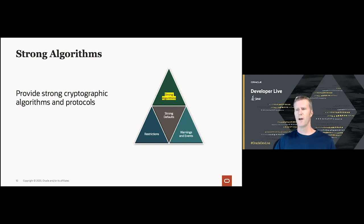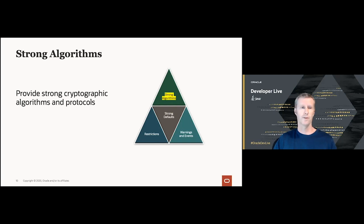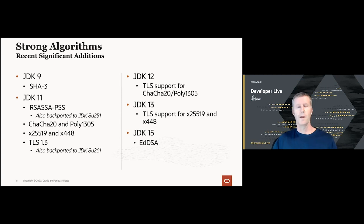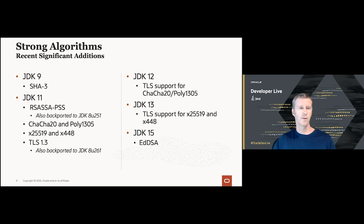The first category is strong algorithms—ensuring that the JDK has a set of strong cryptographic algorithms and protocols that allow you to build modern secure Java applications. We must continuously add new and stronger algorithms. In JDK 9, we added support for SHA-3, the next-generation hash algorithm designed to be as strong as SHA-2.